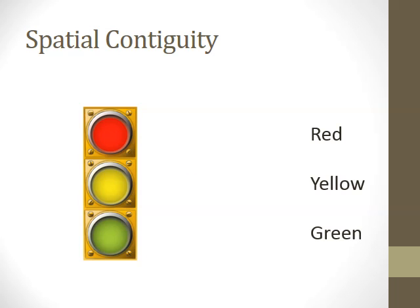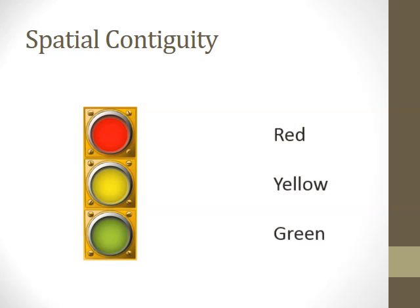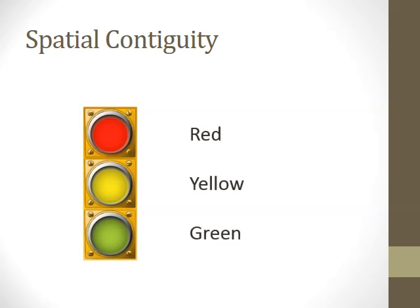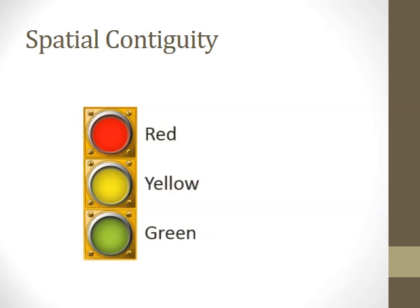Place essential words next to corresponding graphics. Users should not have to guess what text is labeling. Text should be placed next to the elements they are describing, and captions should be unambiguous.